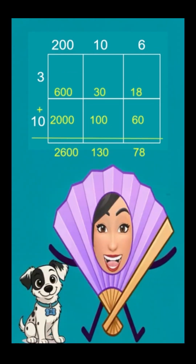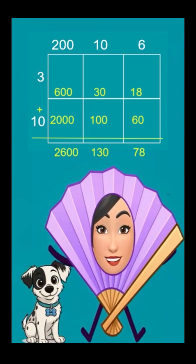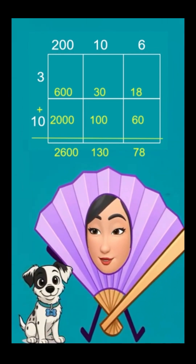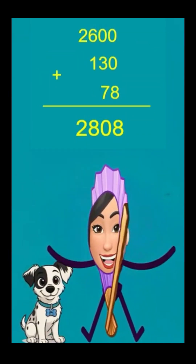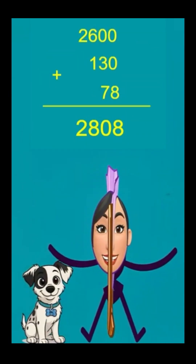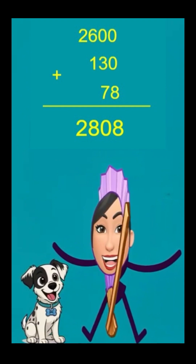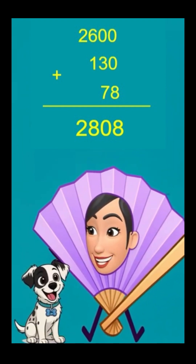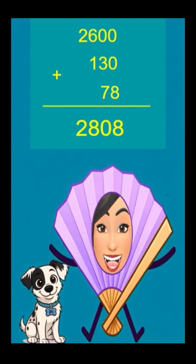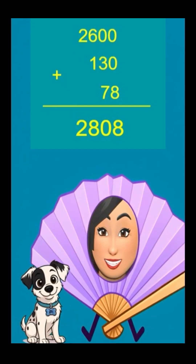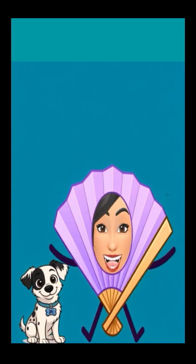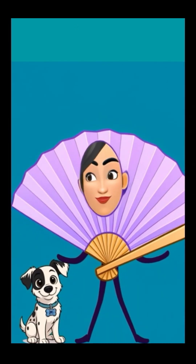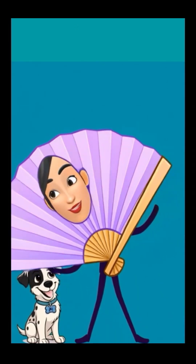I'd like to add the columns together, then take the three numbers to add them up. So 13 times 216 is equal to two thousand eight hundred and eight. Aren't you a fan of area modeling?